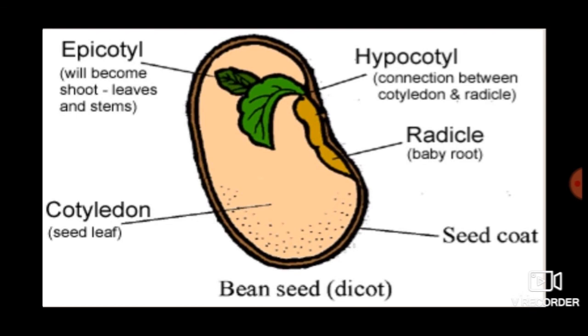Seeds are found in various colors. Each seed has an outer covering called the seed coat that protects the seed. The seed coat is hard. The seed has a baby plant in it. The seed leaves provide food for the baby plant.